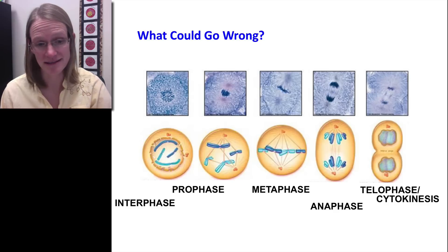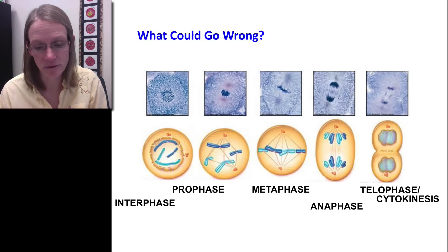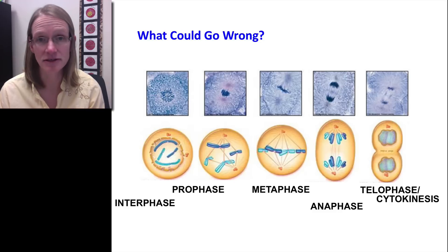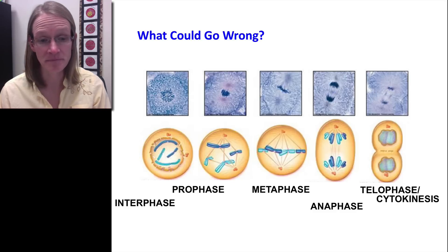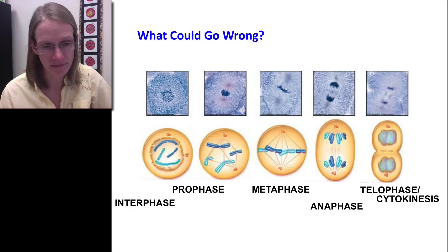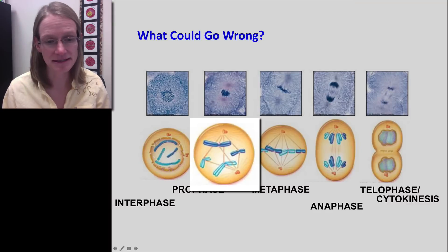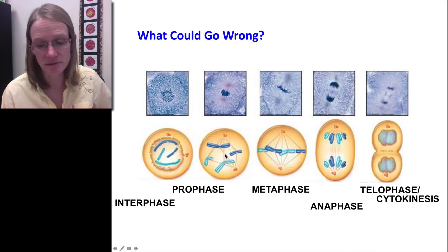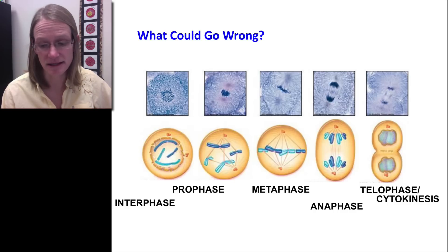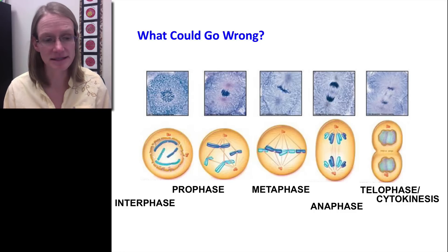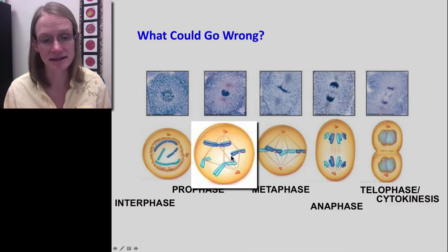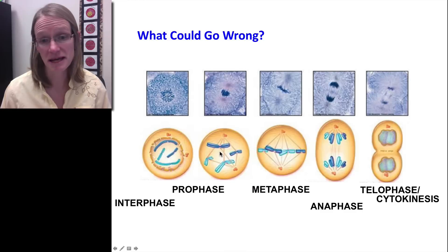If we successfully move through interphase and get into prophase, things can still go wrong. Chromatin normally condenses into chromosomes so they can move appropriately, but they might fail to condense. The spindle fibers might not form and attach to the kinetochores at the centromeres. Additionally, the nuclear membrane needs to fragment and disappear during prophase, and that could also fail to happen.